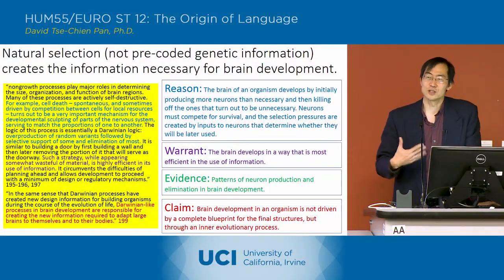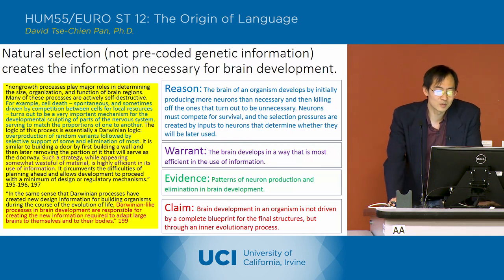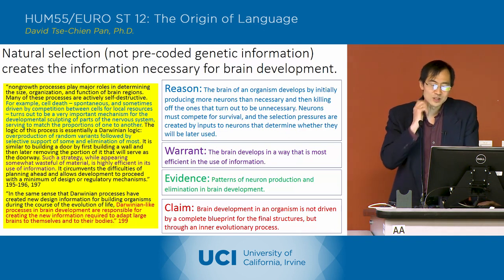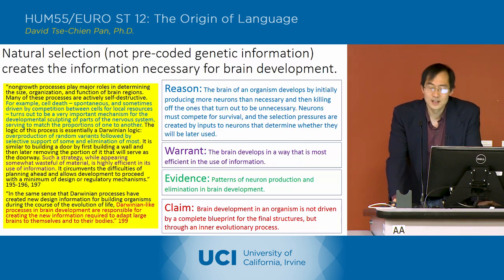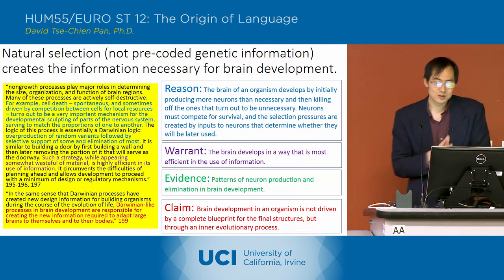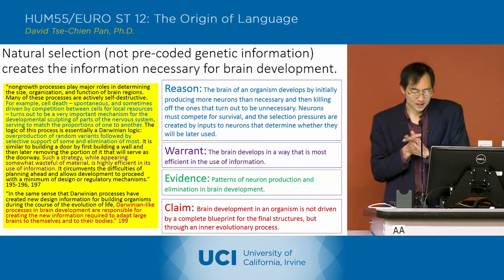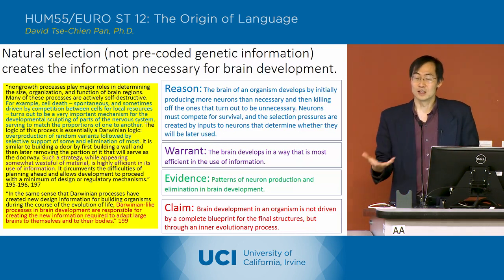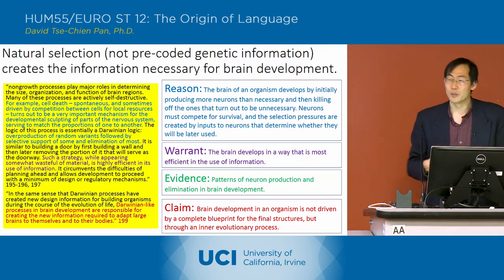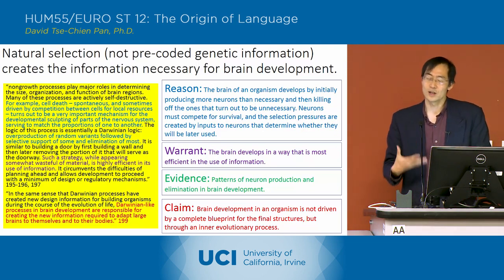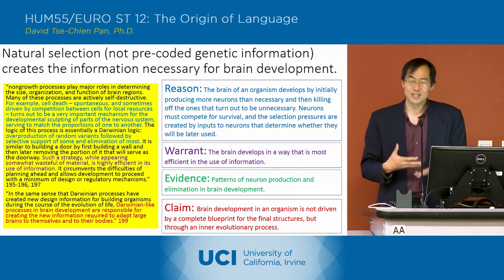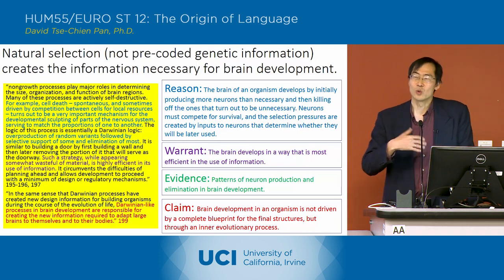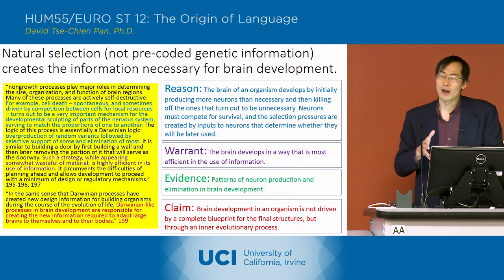In the next section, Deacon gets into the way in which natural selection creates the information necessary for brain development. This is a kind of natural selection that goes on within the brain. The key is that he wants to argue that the information contained in the brain, particularly about language processing, is not contained in a genetic blueprint, but develops through what he calls an inner evolutionary process.